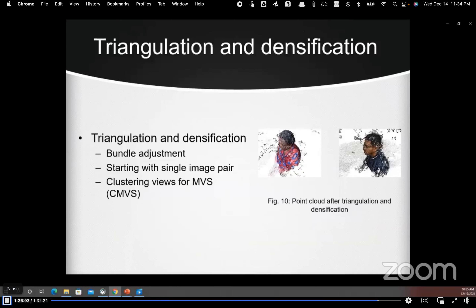In the next step, triangulation is performed, which is a bundle adjustment process among camera parameters, camera motion, and 3D structure. It starts with one image pair and gradually increases points in the point cloud.